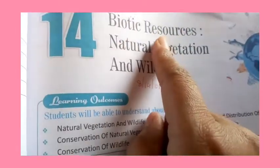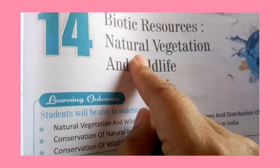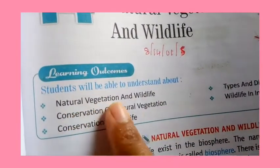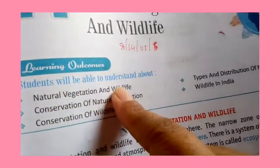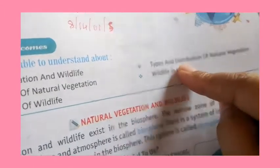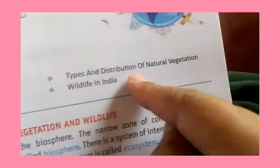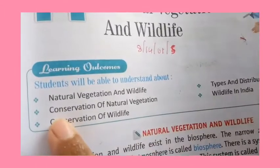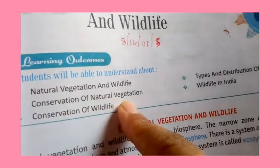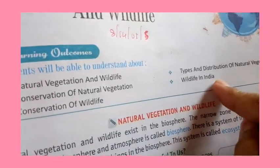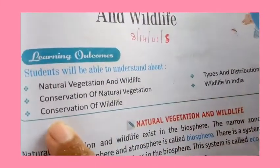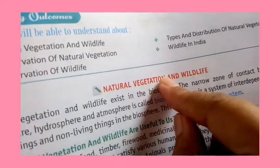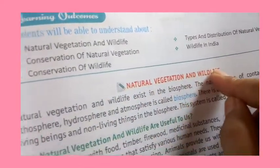In this chapter we will look at biotic resources, referring to natural vegetation and wildlife. The topics include: type and distribution of natural vegetation, conservation of natural vegetation, wildlife in India, and conservation of wildlife.